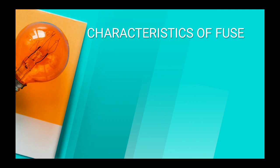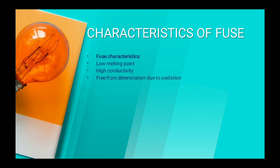Next, the characteristics of a fuse. Number one: low melting point — in very low temperature the fuse can melt, so its melting point is low. If it has a high melting point then it can't protect the electrical devices, because if short circuit or overload current persists for too long the apparatus gets damaged. So the fuse must have a low melting point, melting in a small amount of heat. Also: high conductivity, free from deterioration due to oxidation, and low cost.